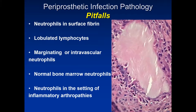Another pitfall is gout or gouty tophi appearing in revision arthroplasty specimens. While uncommon, when you see enough cases you will encounter it. The body mounts a strong response to uric acid crystals — not just histiocytic, but also neutrophilic. In fact, acute osteomyelitis-like changes associated with gout are not uncommon. If you identify those types of crystals, I back off a little and give myself some latitude in determining whether this truly represents periprosthetic joint infection.